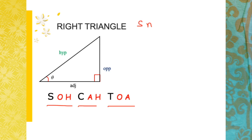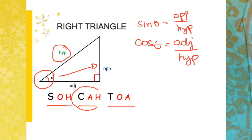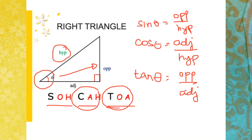Sine of an angle equals opposite over hypotenuse — that's your SOH. If this is our angle, this will be the opposite over the hypotenuse. Cosine of an angle is adjacent over hypotenuse — that's your CAH. And tangent of an angle is opposite over adjacent — that is your TOA.